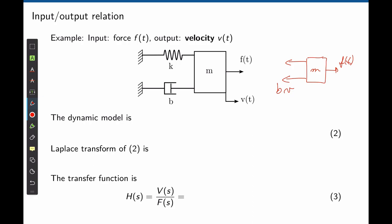The force applied by the spring is the displacement times the stiffness constant k, which is k·x. Since we are dealing with velocity rather than displacement, we need to integrate the velocity to get displacement. So the spring force is k times the integral of v(t) dt.